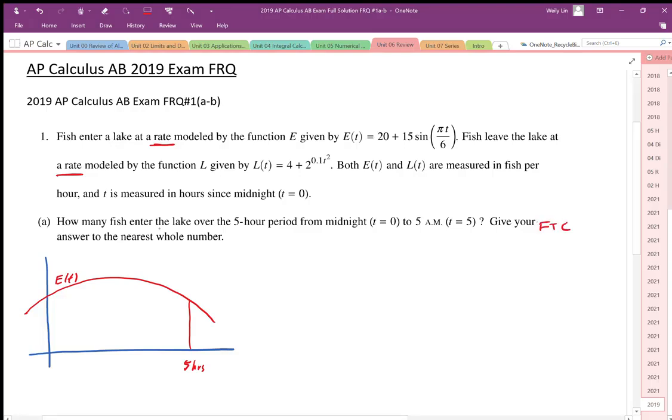It asks how many fish enter the lake over a 5-hour period from t equals 0 to t equals 5. So we want to know the number of fish given the rate that the fish enter the lake. The E of t function is drawn here. This is a graphing calculator problem, and I want to find the total change in the number of fish.